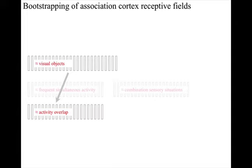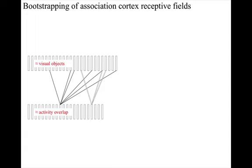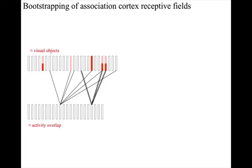There will be a genetic bias on connectivity from discriminates visual objects to the discriminates activity overlap area. And the genetic bias on connectivity also results in some columns having multiple inputs from each source column in a small group.